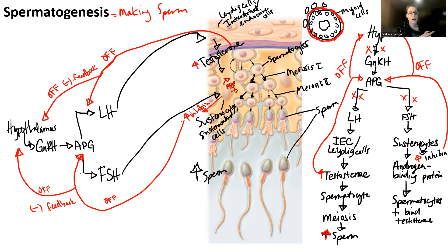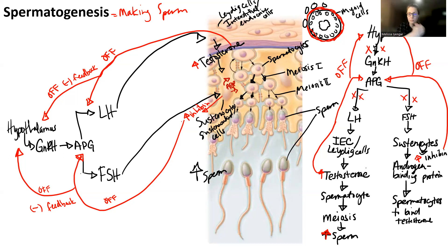When sperm count goes down, you turn the system back on again because the negative feedback turns off — testosterone levels decrease and inhibin levels decrease, and the system gets turned back on again. So that's spermatogenesis.